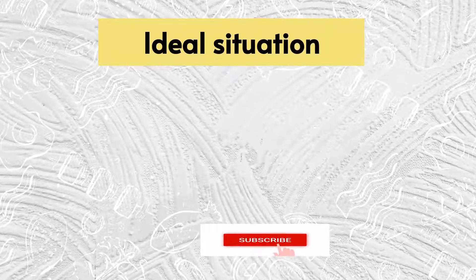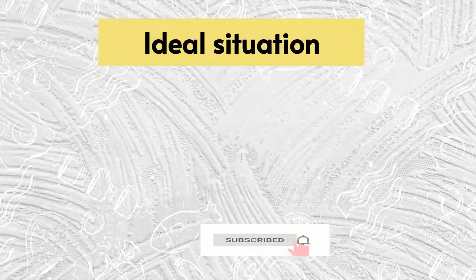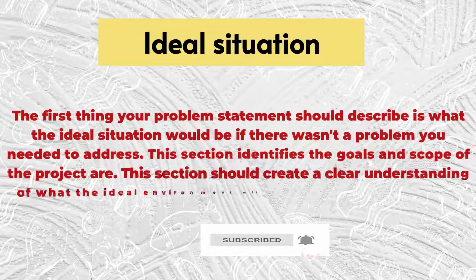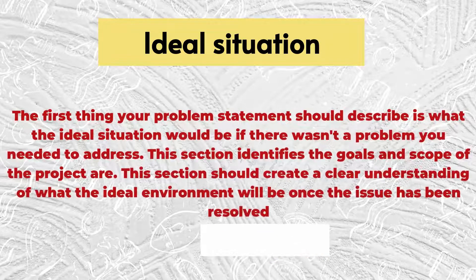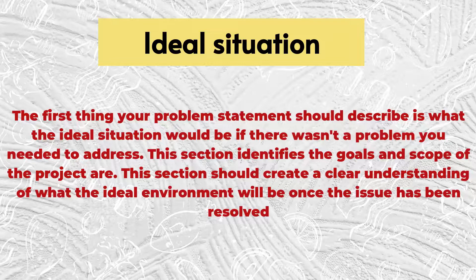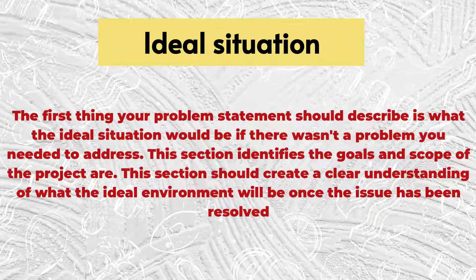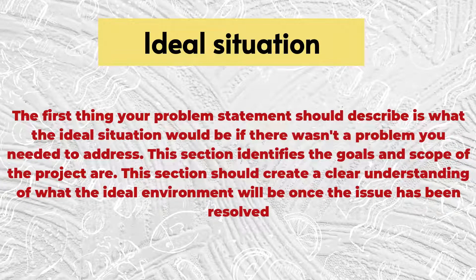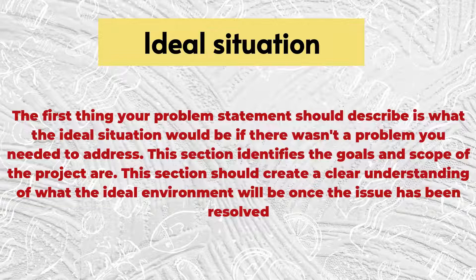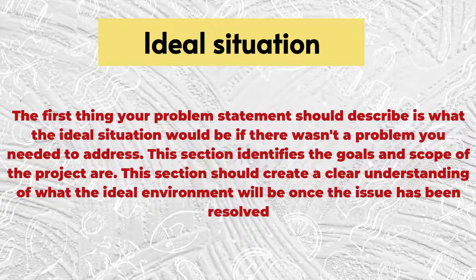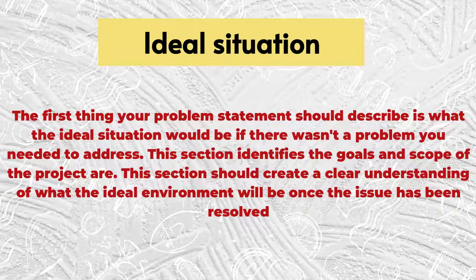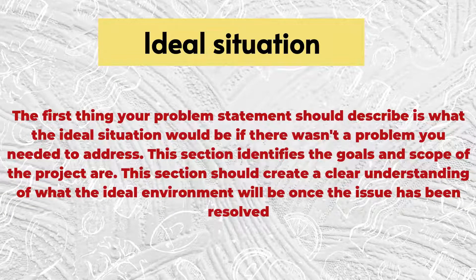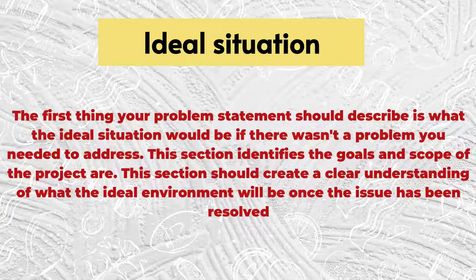1. Ideal Situation. The first thing your problem statement should describe is what the ideal situation would be if there wasn't a problem you needed to address. This section identifies the goals and scope of the project, and should create a clear understanding of what the ideal environment will be once the issue has been resolved.